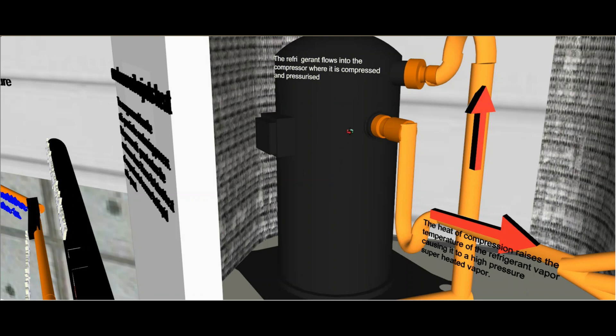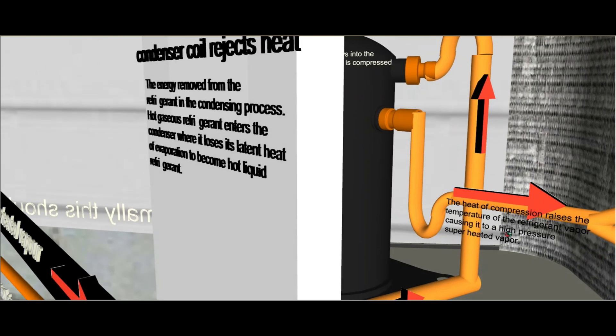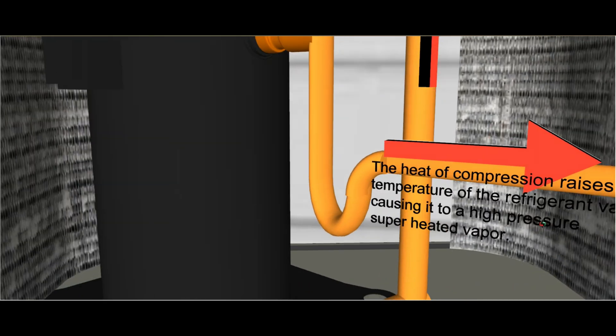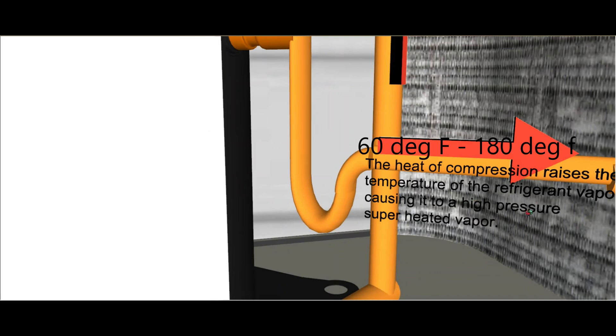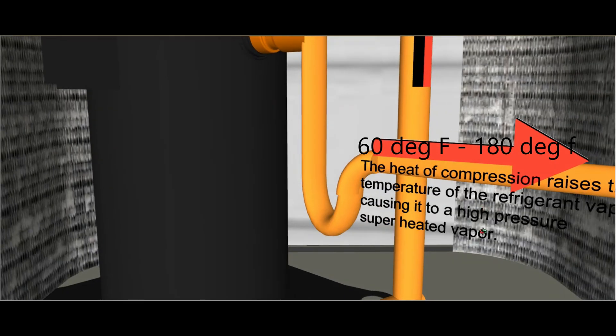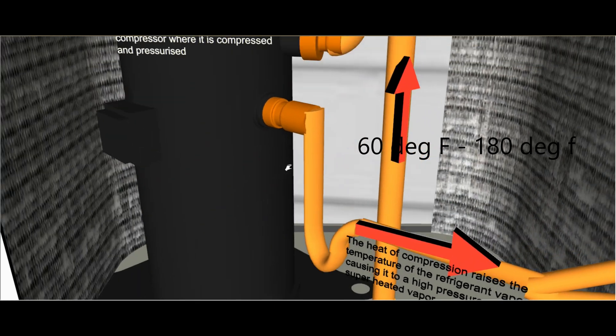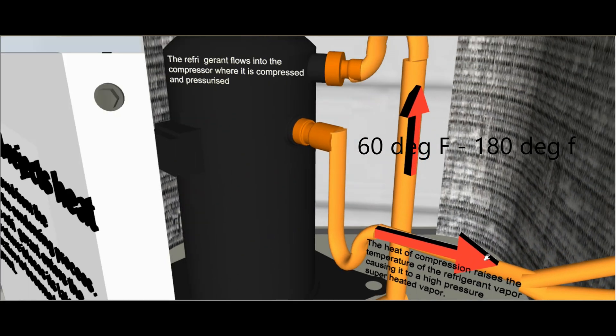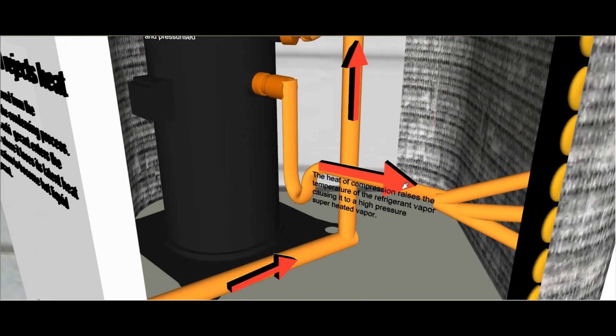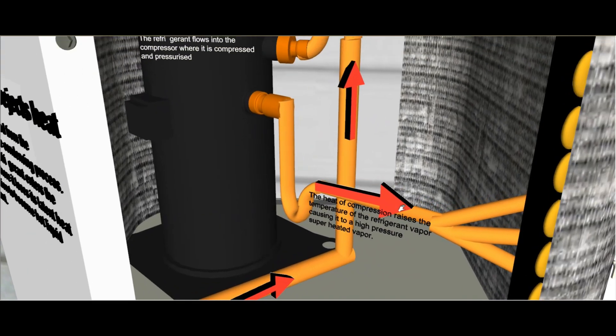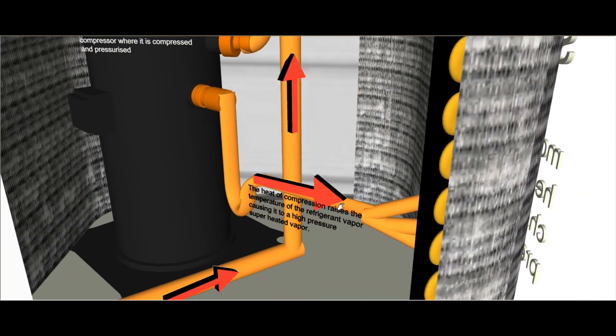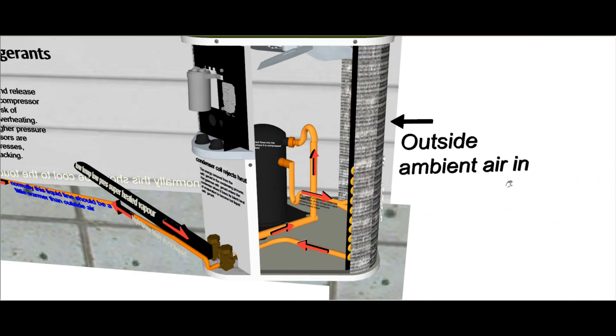So it's going to come out an even hotter temperature here. So the heat of compression raises the temperature of the refrigerant vapor, causing it to a high pressure superheated vapor. So it's going to get even hotter here, so it'll jump from 60 degrees Fahrenheit to about 180 degrees Fahrenheit, and that's hot. Now remember, hot is attracted to cold. If this is 180 degrees Fahrenheit and we have about 80 degrees Fahrenheit here, it's not going to be attracted to it because this is hotter than this outside temperature, so it's going to reject it.